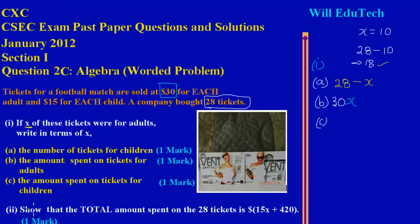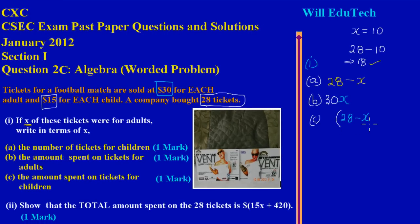They're asking us to write an expression for the amount spent on tickets for children. We have the number of tickets the children received from part A, which is 28 minus X. They said each child's ticket costs $15, so if we have the amount of tickets the children received — which is 28 minus X — and each ticket is $15, then we multiply that by 15. So the expression is 15 times (28 minus X), and those are an easy three marks.